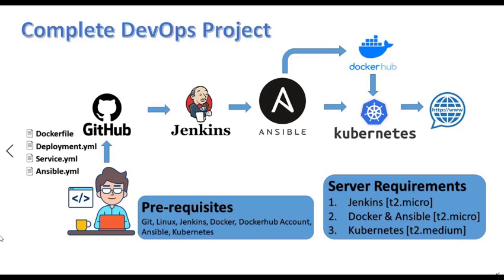Hello guys and welcome to my channel. In today's video we will learn how to implement a real DevOps project using Jenkins, Ansible, Docker, and Kubernetes. I'm going to create a pipeline, and for this pipeline I require four files: the Dockerfile, deployment file, service file, and one Ansible file.